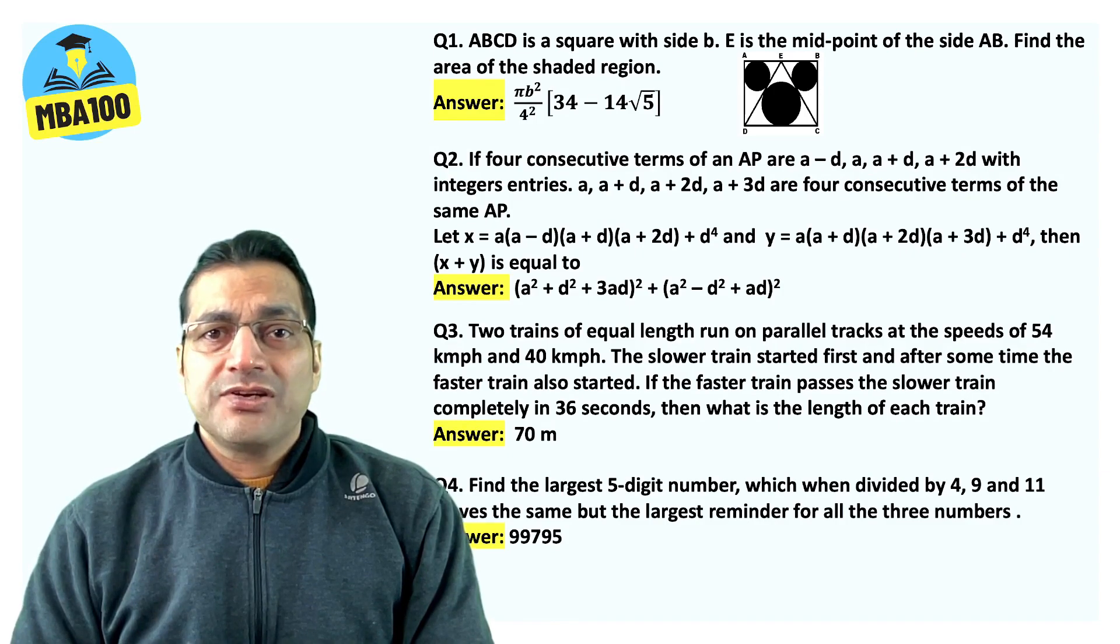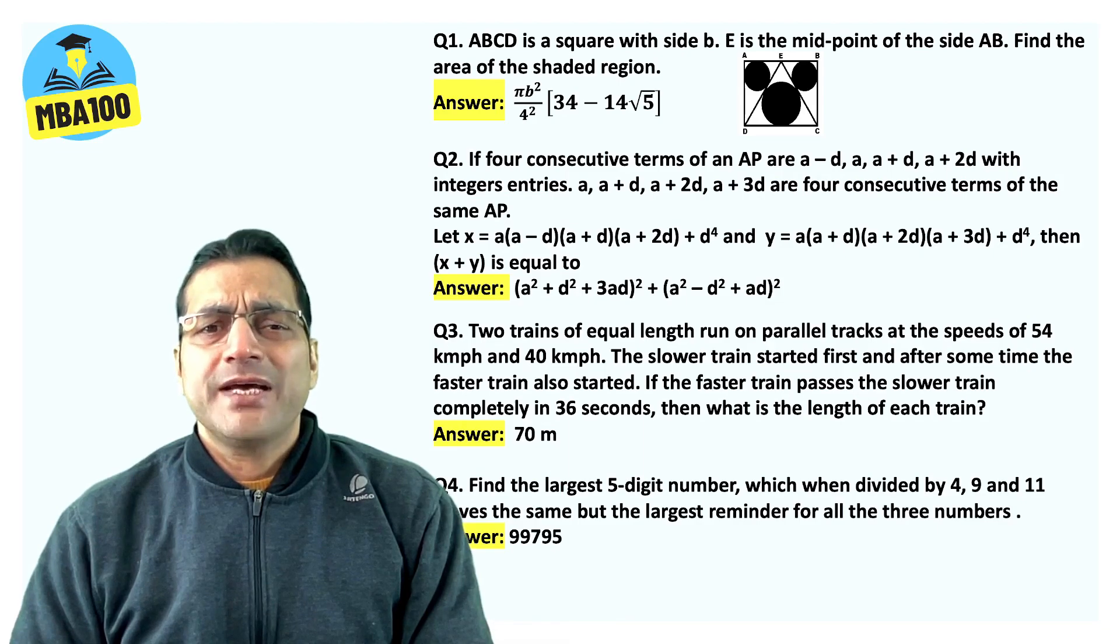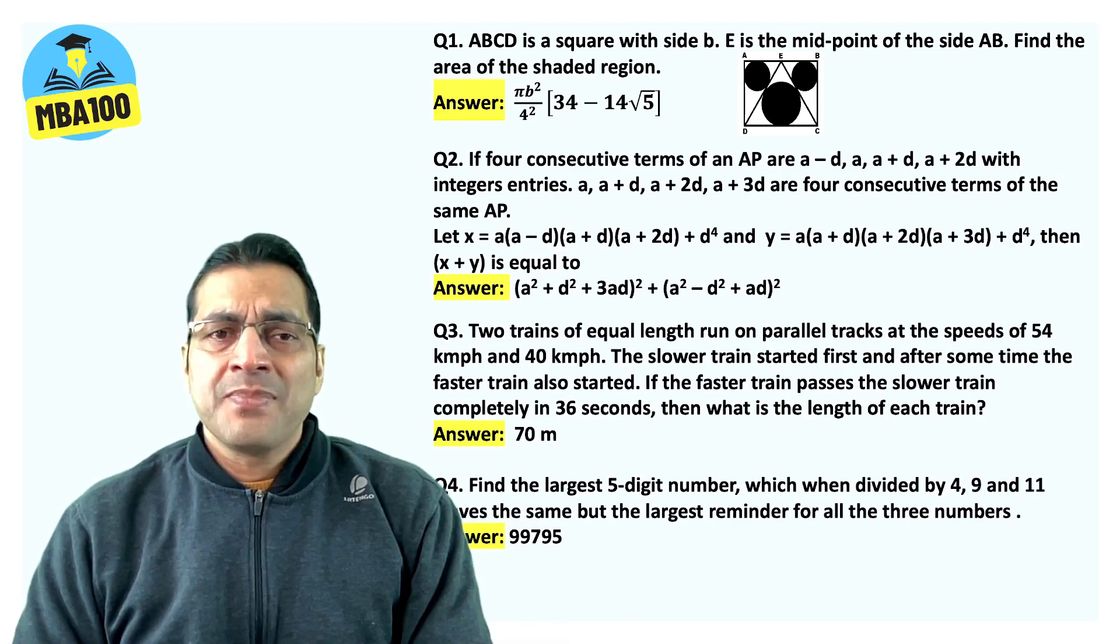Similarly, if four consecutive terms of an AP, the answer is A square plus D square plus 3AD square plus A square minus D square plus AD square. But hey, why don't you take a screenshot?